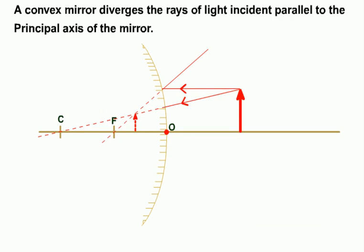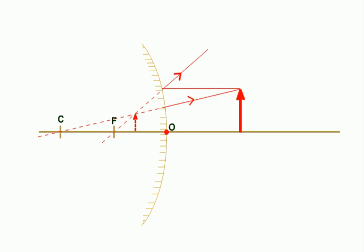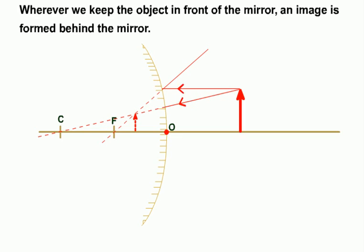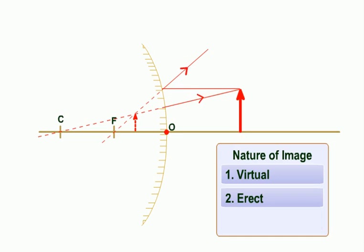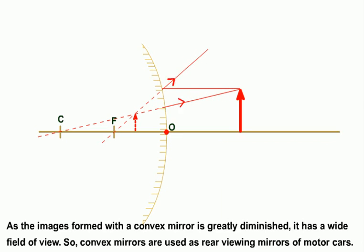A convex mirror diverges the rays of light incident parallel to the principal axis of the mirror. The given ray diagram shows how images are formed in a convex mirror. Whenever we keep the object in front of the mirror, an image is formed behind the mirror. Students, the image will be virtual, erect, and diminished.